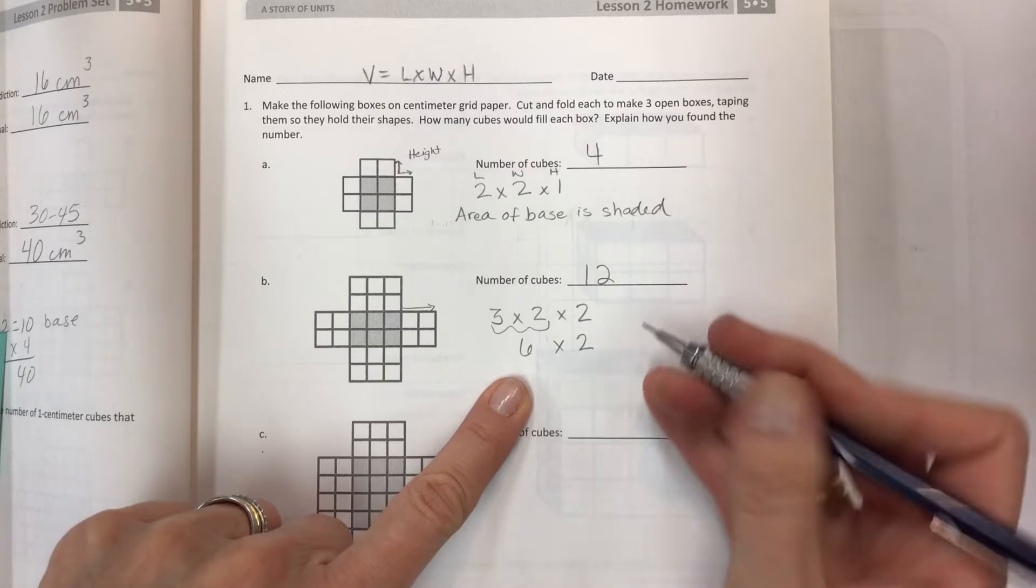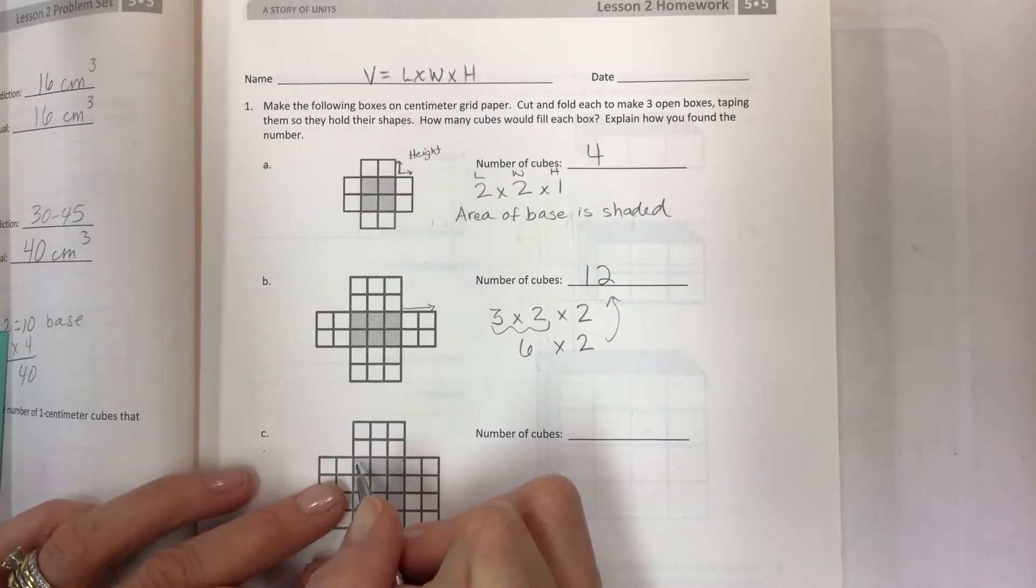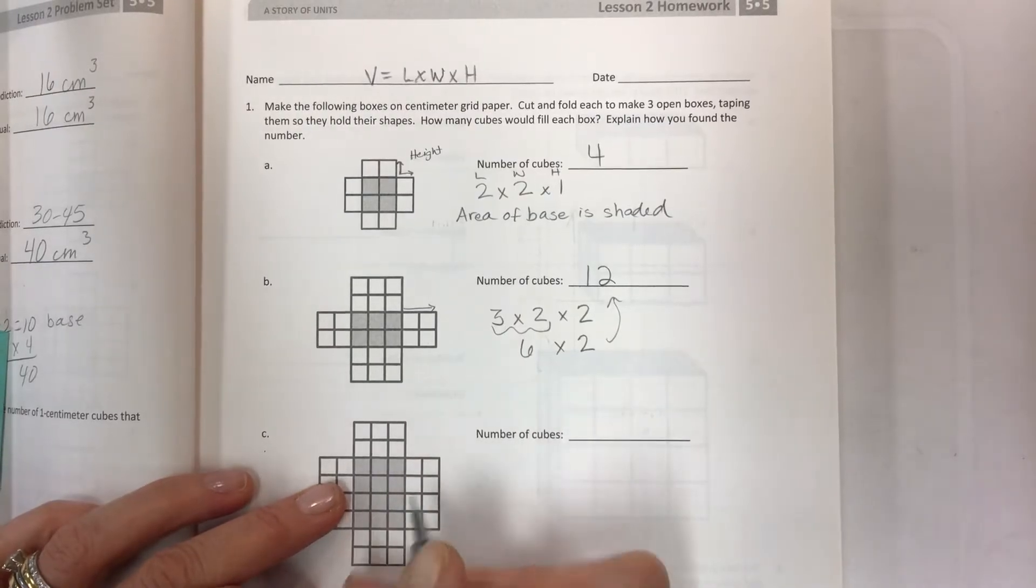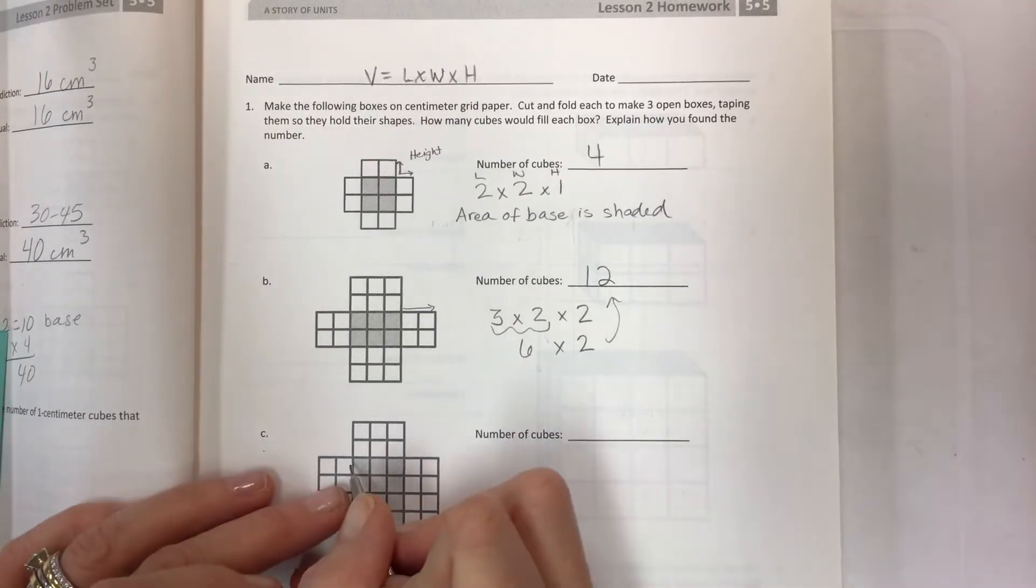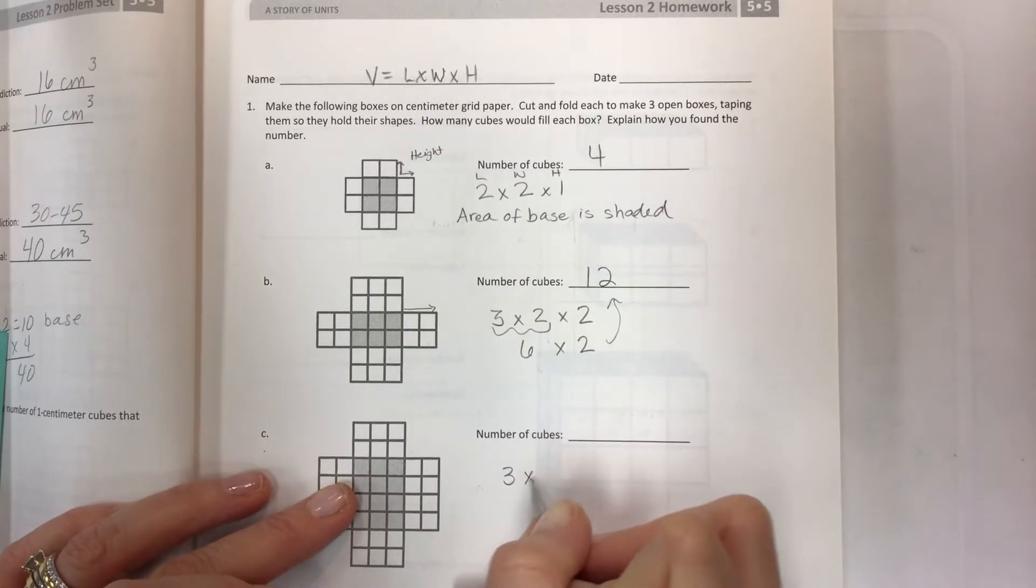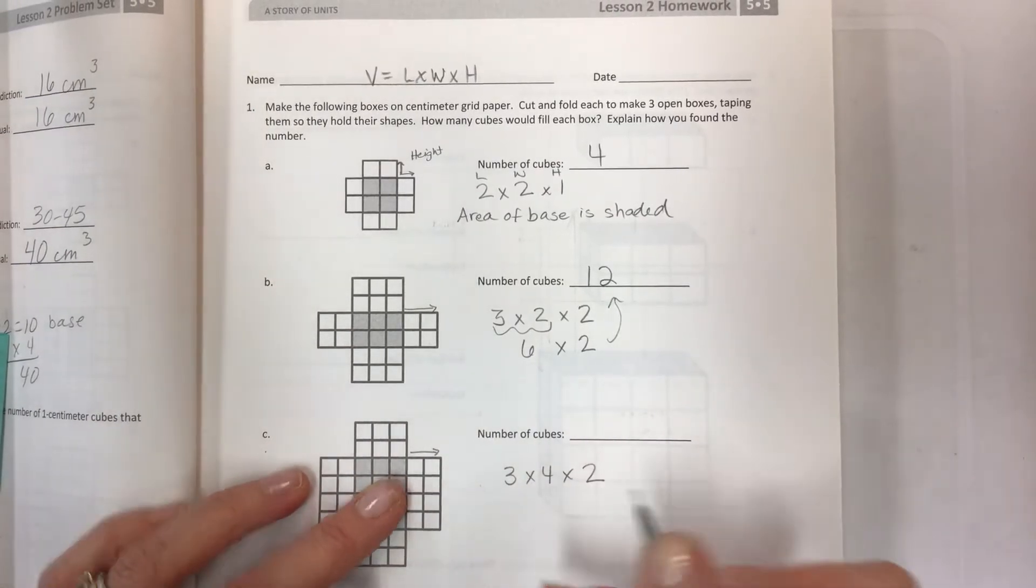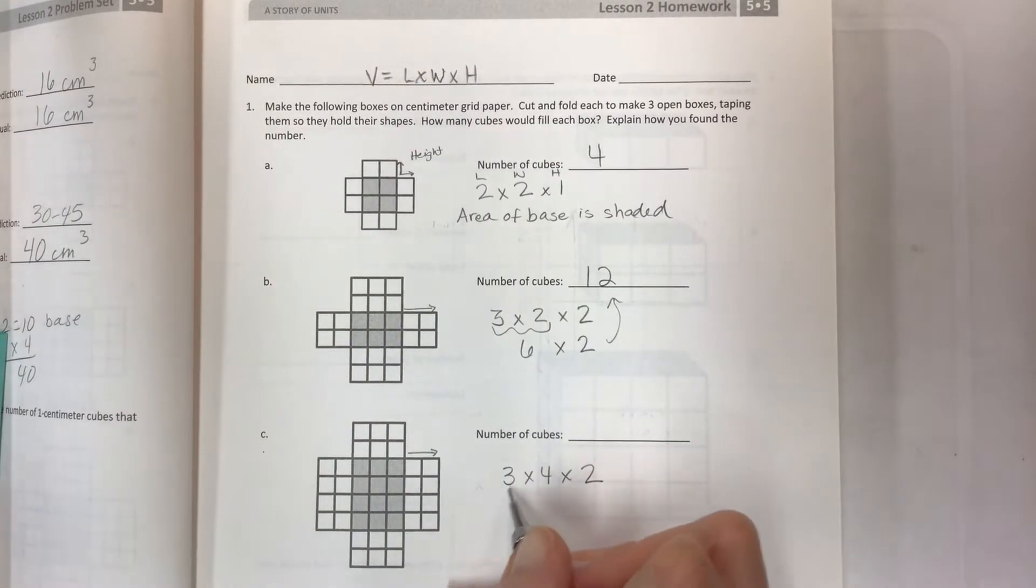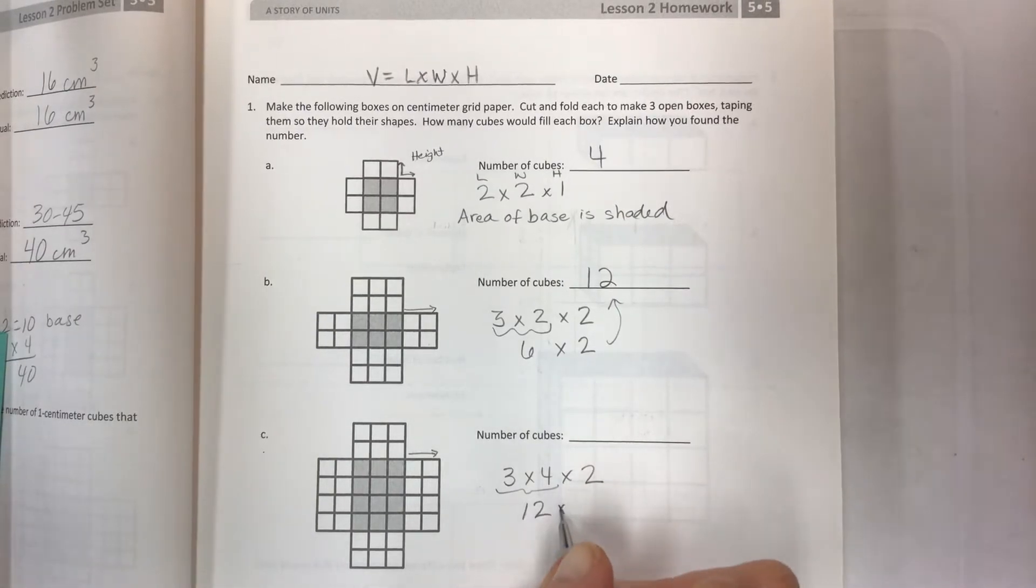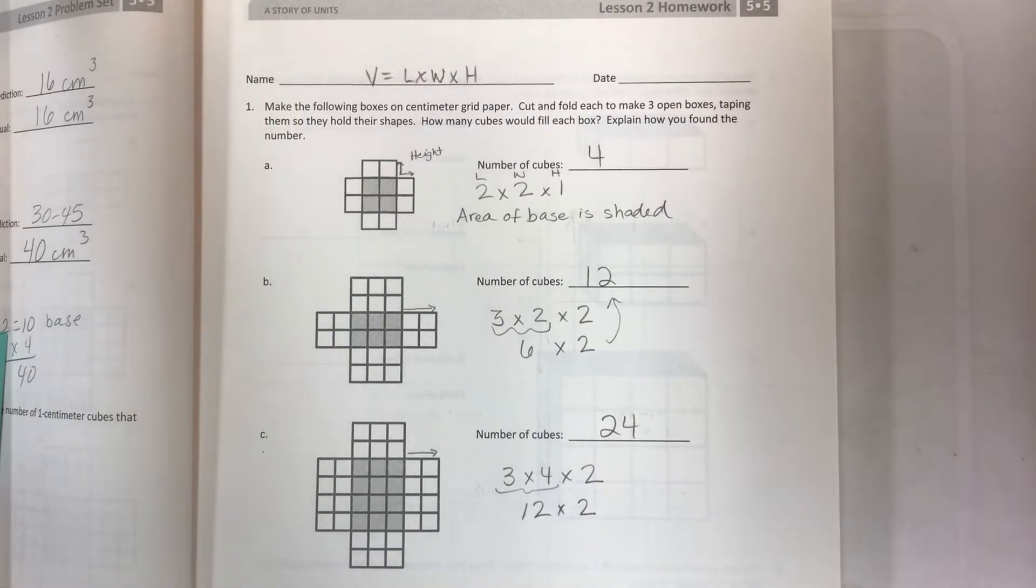Length times width times height—you can do it in any order, but I usually just go length times width. I'm going to do 3 times 4 times the height. In any order, you can do 3 times 4 first, and then 12 times 2, and you'll end up with your 24 cubes that would fill the box.